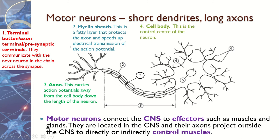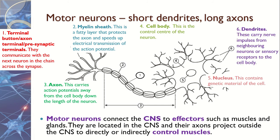We've got the cell body, which is the control centre of the neuron — it tells the neuron what to do. Within that is specifically the nucleus, which contains the genetic information of the cell. Then we've got dendrites on either end, which carry nerve impulses from neighbouring neurons — picking the message up from one neuron and passing it along to the other end.